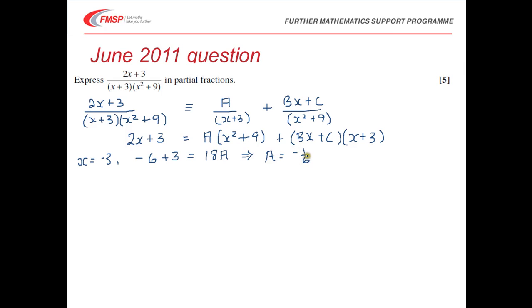So we now have the value of A. What we need to do is try and find the value of B and C. Unfortunately we can't use this method anymore, but what we can do is equate coefficients. If we take the x term first, then the coefficient of the x term is 2, and we would have a 3Bx there and a Cx there, so that would mean that 2 must equal 3B + C.